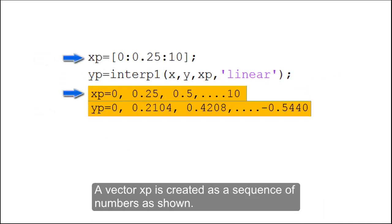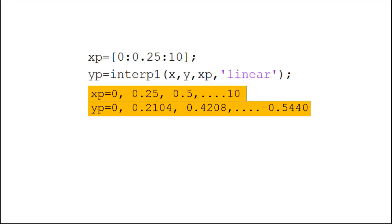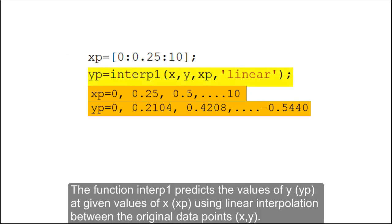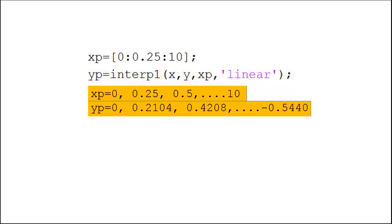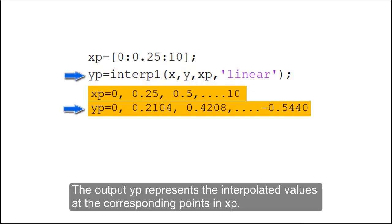A vector xp is created as a sequence of numbers as shown. The function INTERP1 predicts the values of y at given values of x using linear interpolation between the original data points. The output yp represents the interpolated values at the corresponding points in xp.